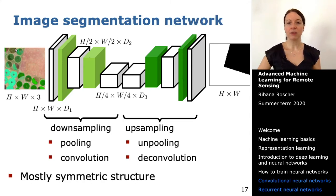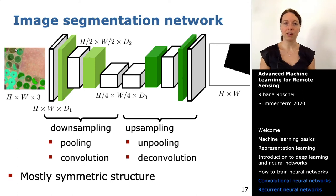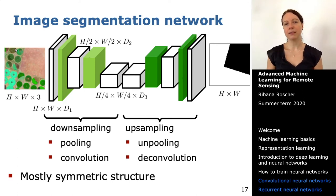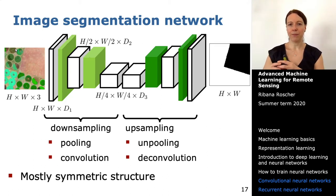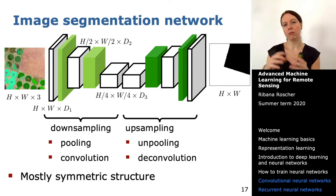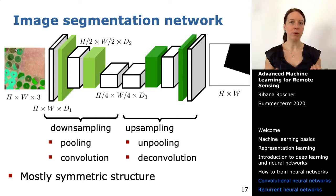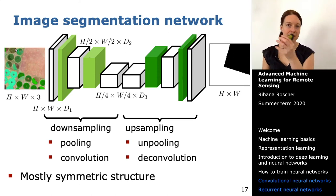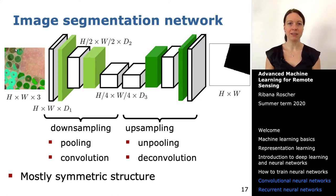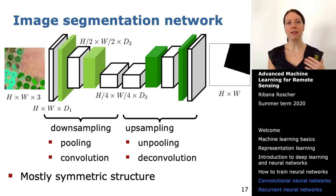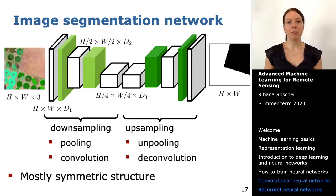Returning to downsampling and upsampling strategies: the concept behind downsampling is that you summarize information in a specific area, making the current representation more compact and focusing on important information. This is the same concept as in autoencoders — the encoding part with a bottleneck layer. The same principle applies here.